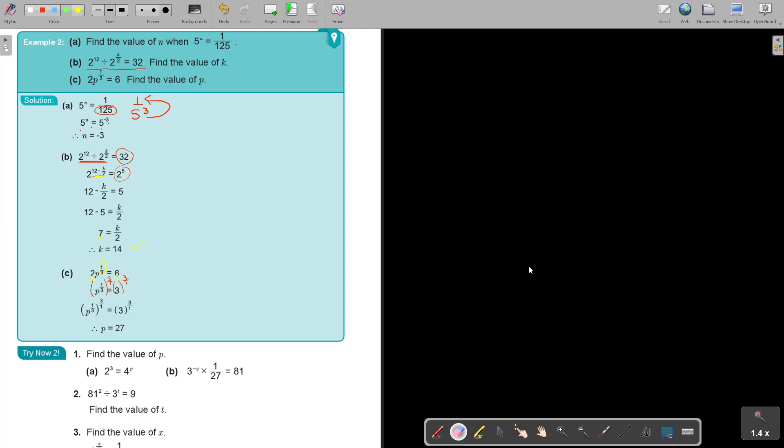And then I go to the next one, number B. So 3 to the power of negative Q multiply 1 over 27 equals 81. Let's just simplify. Let's make it 3, negative Q. I'm doing long, you don't have to do so long. 81, if I start dividing with 3, then I get 27, then 9, then 3, then 1. It's going to be 3 to the power of 4.